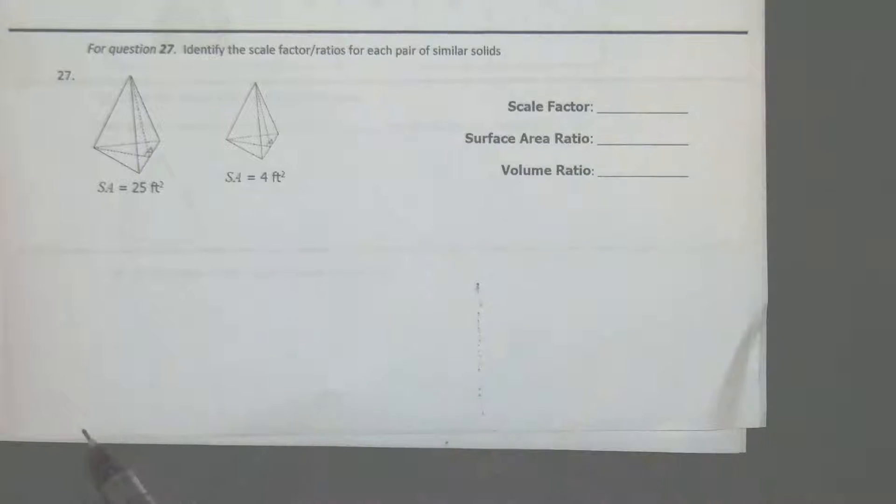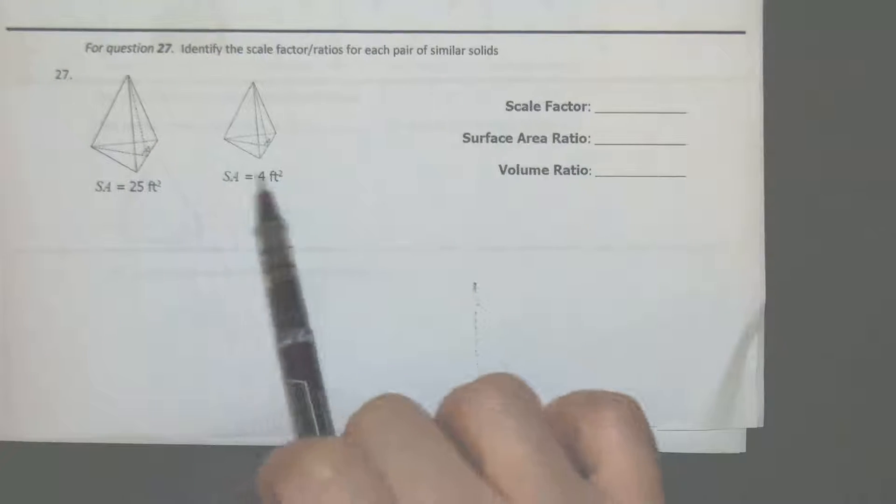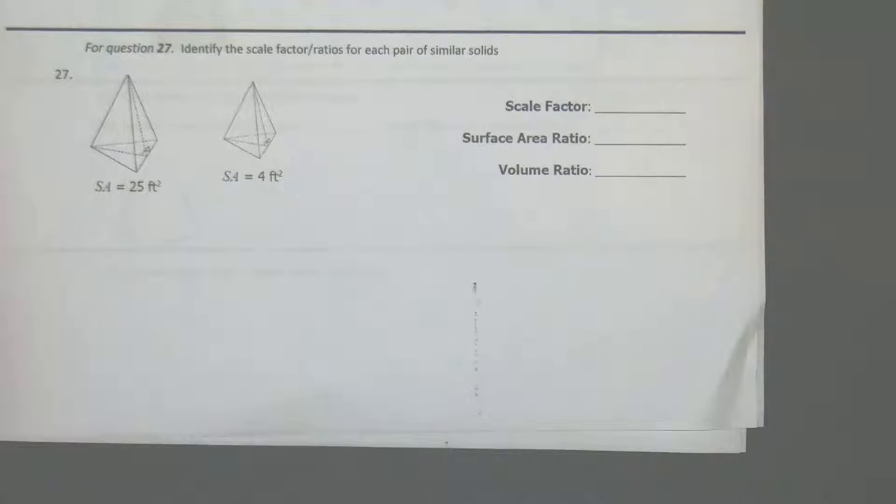Identify the scale factor ratios of each of the similar solids. We have 25, 4. First thing we would look is if we could simplify that. We can't.